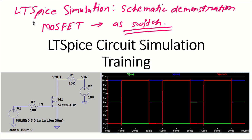Namaskar my dear friends. As we have been seeing LTSpice simulation, now we will see MOSFET as a switch — how a MOSFET can work as a switch in LTSpice. Whenever the enable signal is high, the MOSFET will get switched on and the output will get grounded, becoming low. Whenever the enable is low, the MOSFET is not conducting, so the output will be high.